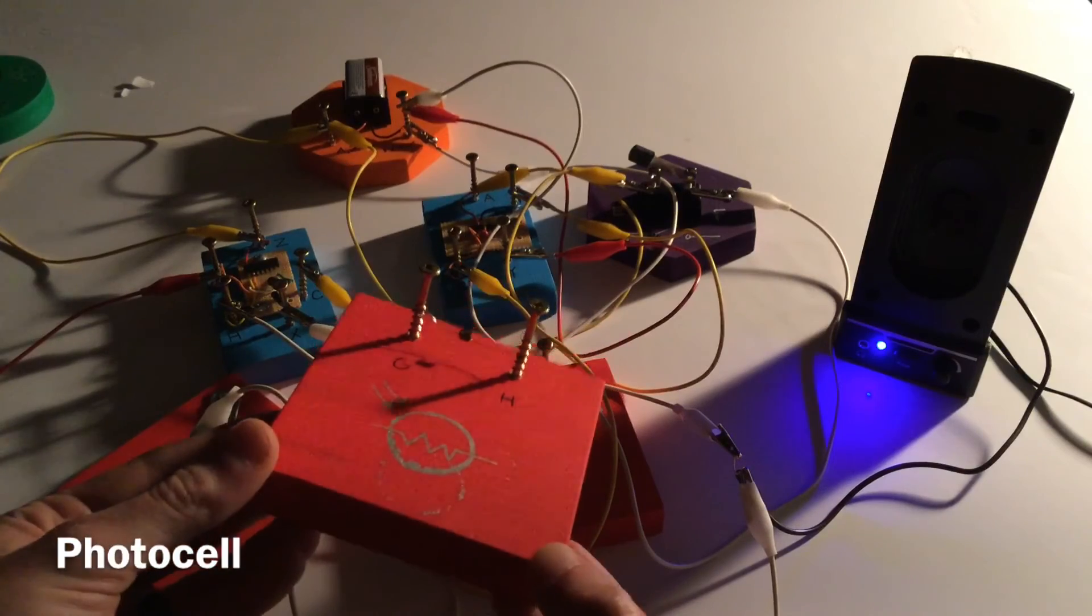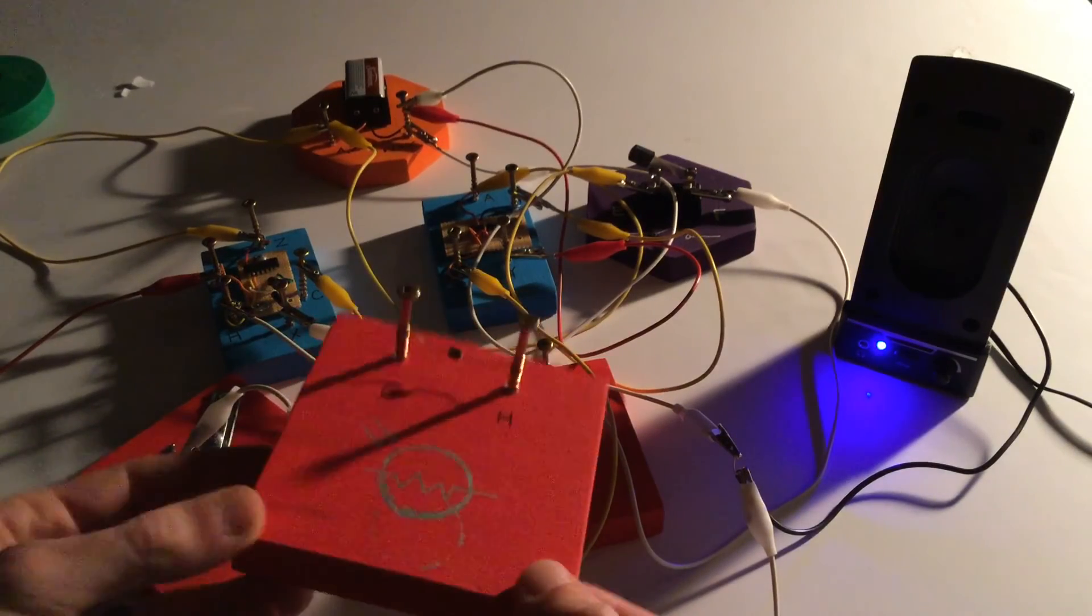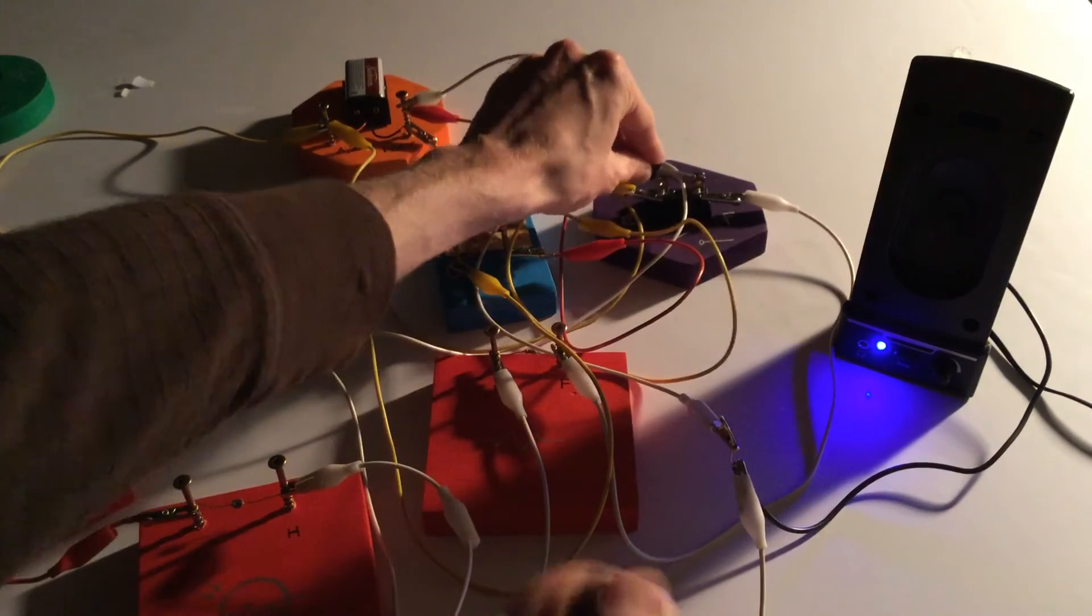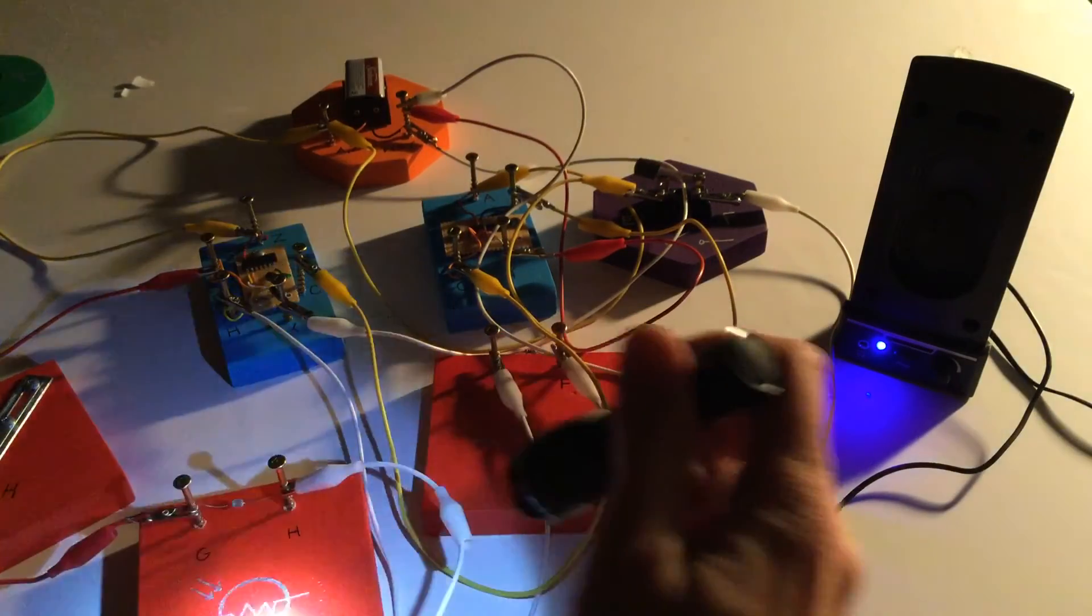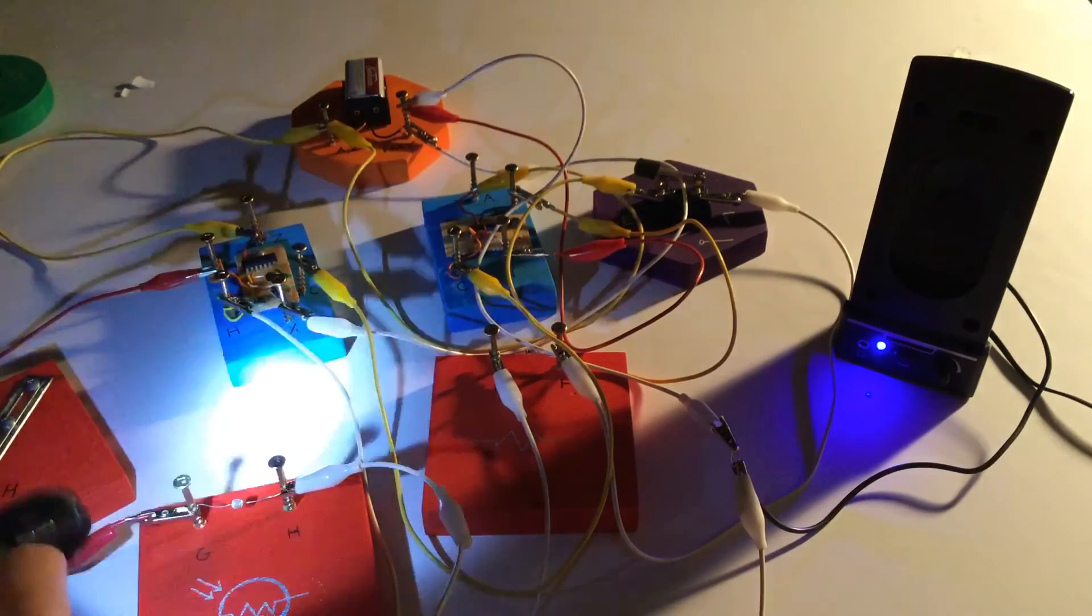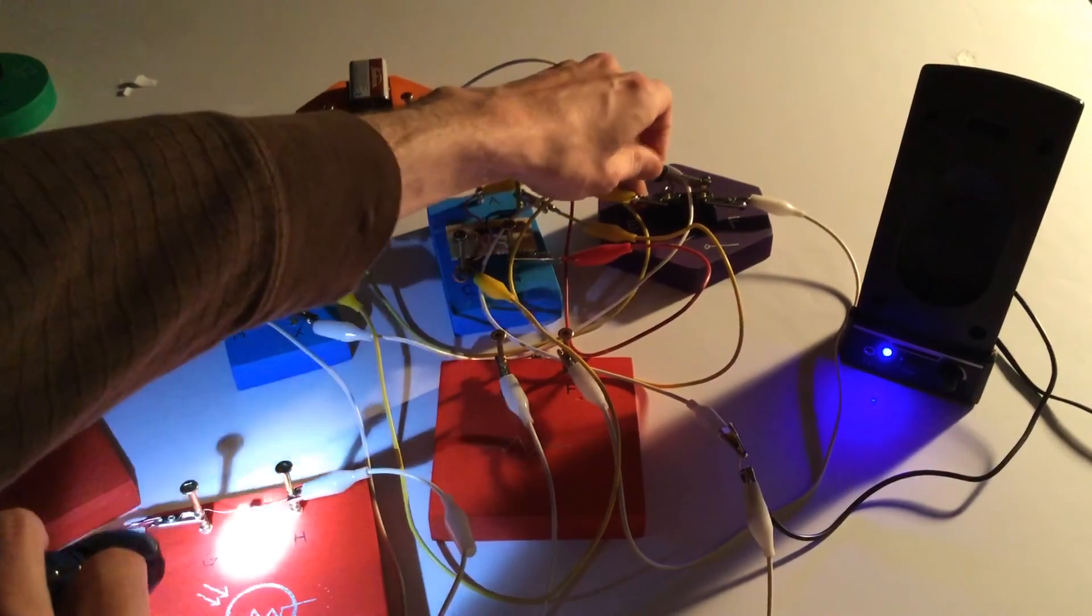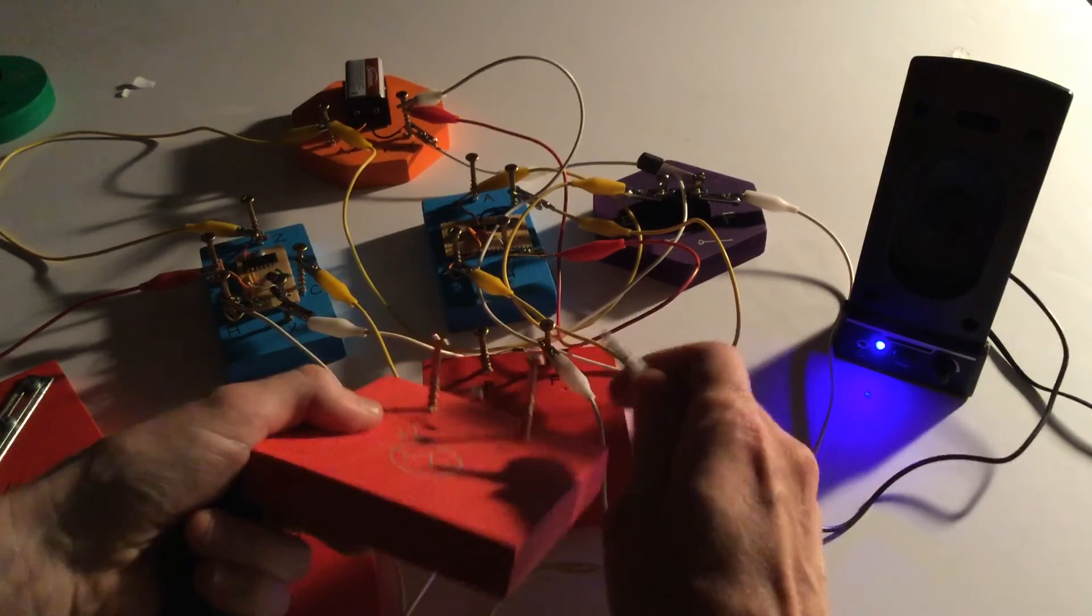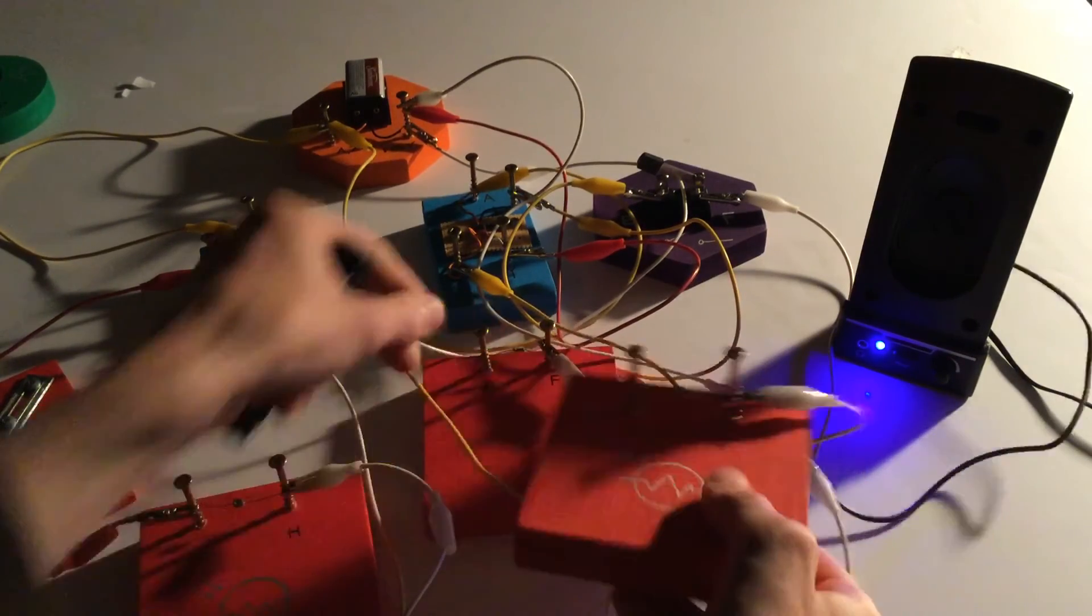Then we have the photocell which changes resistance based on how much light there is on it. If you have time, add another flashlight and another photocell.